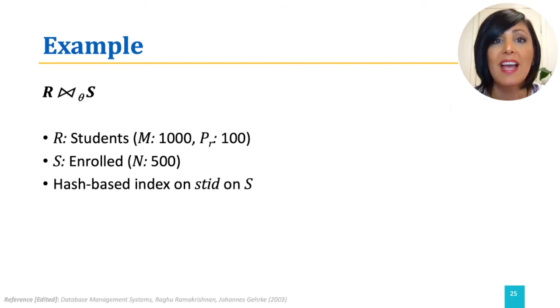And we know that the average cost of matching tuples using this hash index is 1.2. We also have to consider the cost of one page load for getting a page containing the qualifying tuple after getting the data entry from the index.